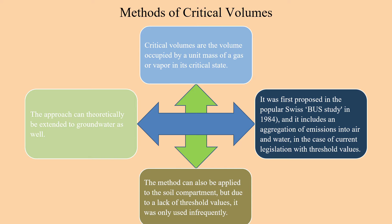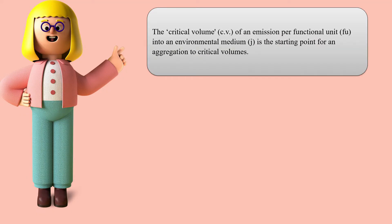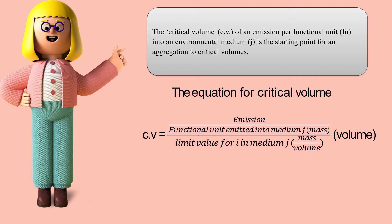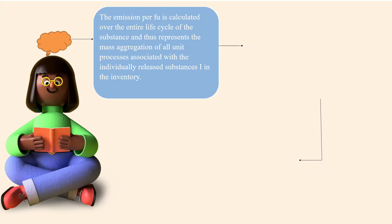The approach can theoretically be extended to groundwater as well. The critical volume CV of an emission per functional unit FU into an environmental medium j is the starting point for aggregation. The equation is: CV = (emission per functional unit emitted into medium j) / (limit value for substance i in medium j), with units of mass over mass per volume, yielding a volume.